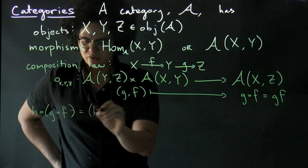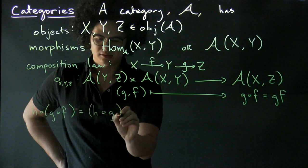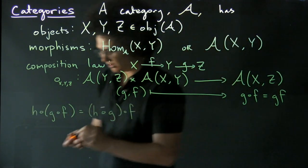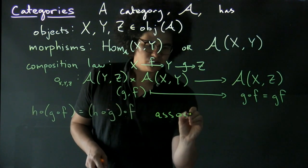in which case it should also be well-defined if you do the bracketing of parentheses in the other order, and we want these two to be equal. So this is associativity.